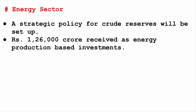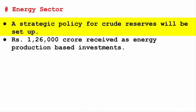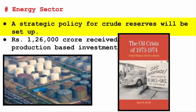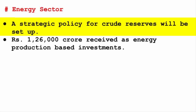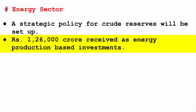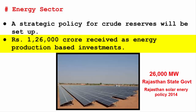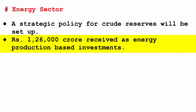Now we will look at the energy sector. A strategic policy for crude reserves will be set up. India has a strategic plan to keep an emergency stockpile of crude oil, similar to reserves maintained by the US after the first oil crisis of 1973. Currently, this reserve project has been set up in three locations: Visakhapatnam, Mangalore, and Padur in Kerala. Additionally, Rs. 1,26,000 crore has been received as energy production-based investment — primarily for solar power — with an estimated 26,000 megawatts of power to be generated, largely under the Rajasthan Solar Energy Policy 2014.